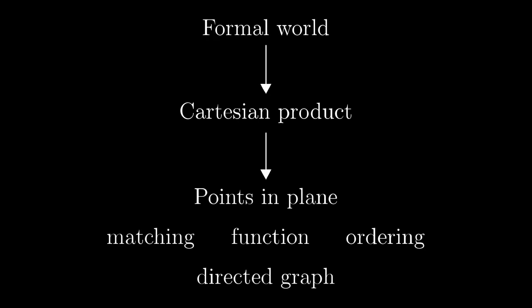Cartesian product is mostly an interlink between the formal world and many more advanced objects, such as the set of points in the plane, matching, functions, or directed graphs. My original intention was to show both parts in one video, the chapter 10, but this chapter grew bigger over time and I also have to admit that both parts are about relatively independent topics.